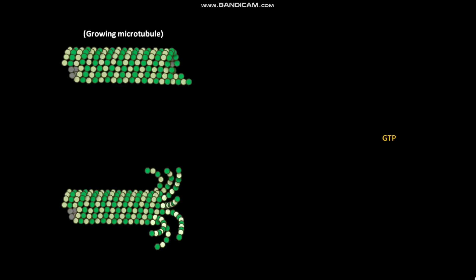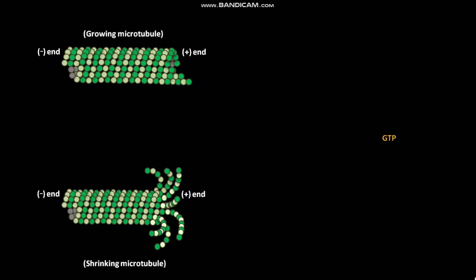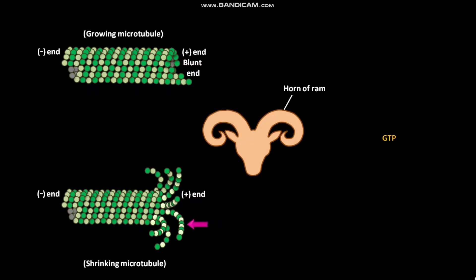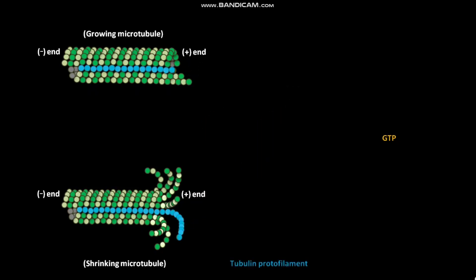This is a growing microtubule and this is a shrinking, or depolymerizing, microtubule. Both microtubules have a minus end and a plus end. The end of the growing microtubule has a blunt end, whereas the shrinking microtubule has curls like the horn of a ram. These are the tubulin protofilaments in the growing microtubule and shrinking microtubule.